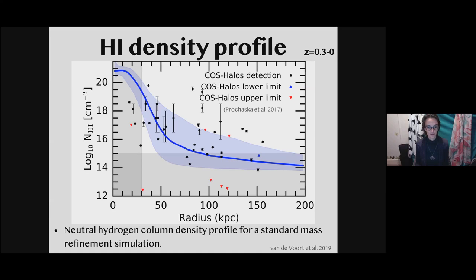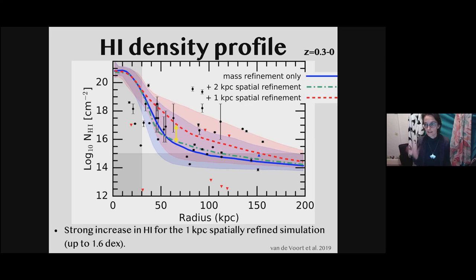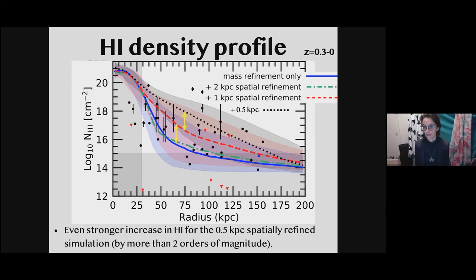Here is the neutral hydrogen profile as a function of radius away from the central galaxy, compared to some data points spanning a wide range of galaxies. I want you to focus on the differences: between 50 and 100 kiloparsec, the median HI absorption is about an order of magnitude higher going to higher resolution. Going to 500 parsec resolution increases it even further — two orders of magnitude higher neutral hydrogen columns in the inner CGM compared to our base resolution. Some works have previously claimed that simulations struggle to have enough cool gas in the CGM.